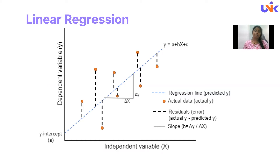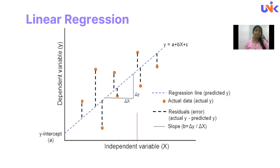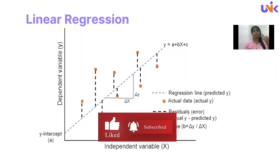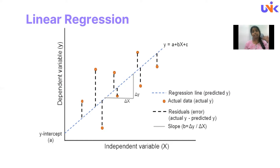Supervised algorithms are those in which we are provided with data that consists of the value of the dependent variable. For example, if you are building a regression model to predict the value of house properties, you will be provided with data that consists of house property values and other parameters such as square feet, number of bedrooms, number of bathrooms, and so on. Then you have to identify the relationship between all these variables and the price variable.